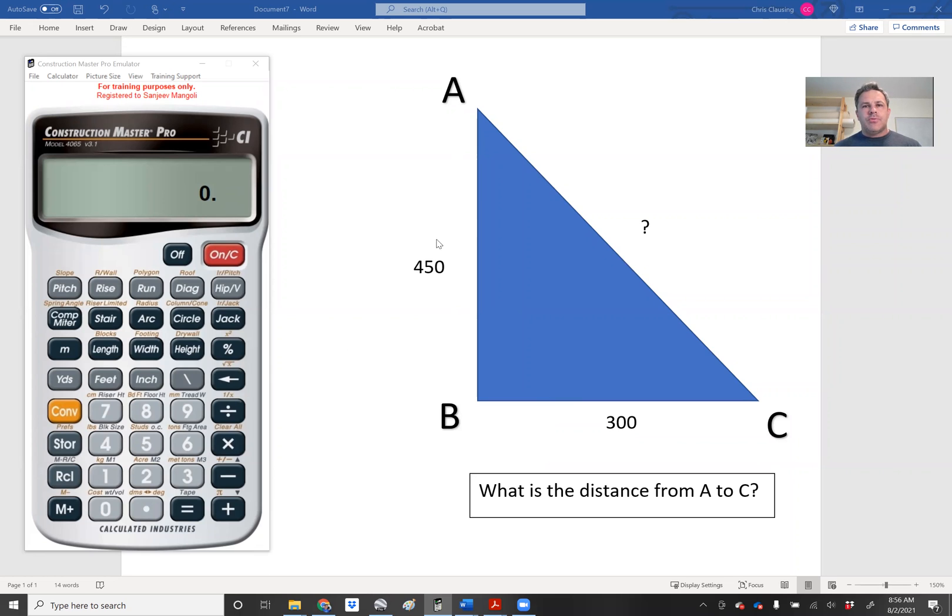So they might present you with a figure that looks something like this, just a triangular shape. There might also be a square or rectangular shape as well, but they're going to label the points. We have here label A and B and C. And the question is, what is the distance from A to C? And you can see they give us from A to B is 450 and from B to C is 300.